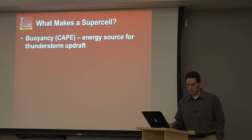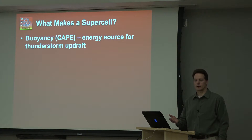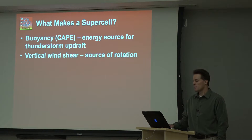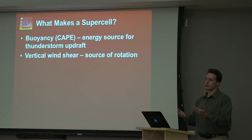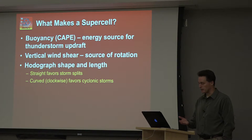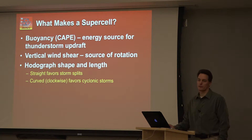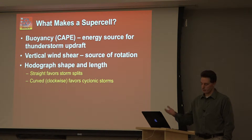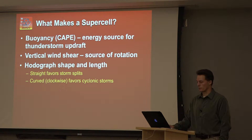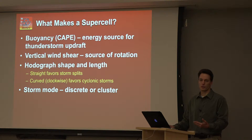What makes a supercell? Starting from the baseline that you have some meteorology background: buoyancy — convective available potential energy — is a measure of the energy available for an updraft in a thunderstorm if it's all released through latent heat. Vertical wind shear provides the source of rotation for the deeper updraft, and this is a function of the hodograph shape and length. The straight hodograph favors splitting storms with both mirror image left and right movers, while the curved hodograph — specifically the clockwise turning hodograph — favors cyclonic or right-moving supercells in the northern hemisphere. It also matters whether you get linear convection versus more discrete modes when forecasting supercells and specifically tornadoes.